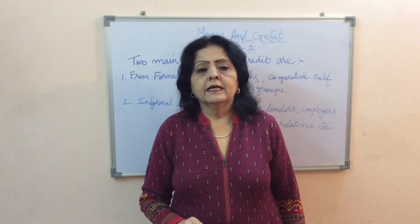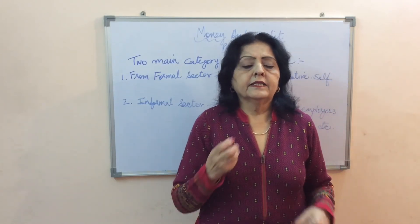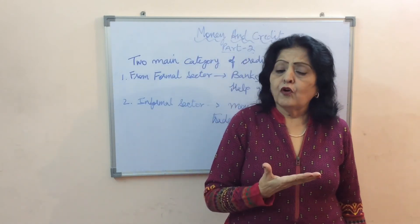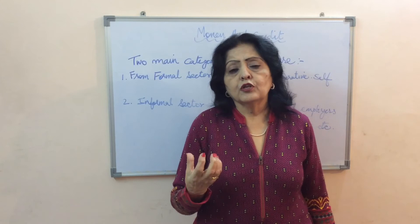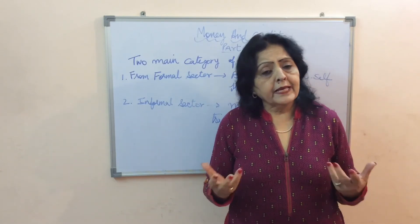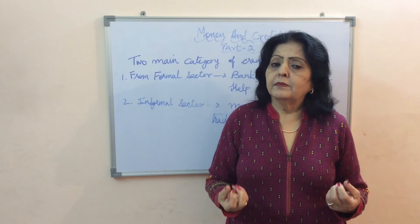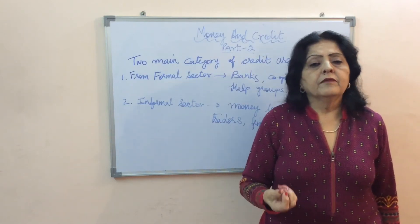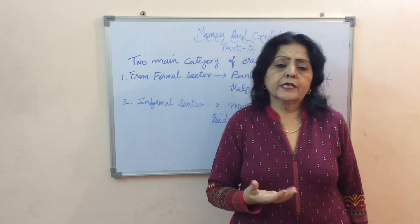On the other hand, in the informal sector, money lenders charge a very high rate of interest. They do not follow any terms of credit and also use fraudulent methods for recovery. Usually, poor households from both rural and urban areas borrow from money lenders. Most probably, in rural areas, poor farmers are not able to supply collateral and are also not able to furnish documentation. That is why they have to depend on money lenders who exploit them.